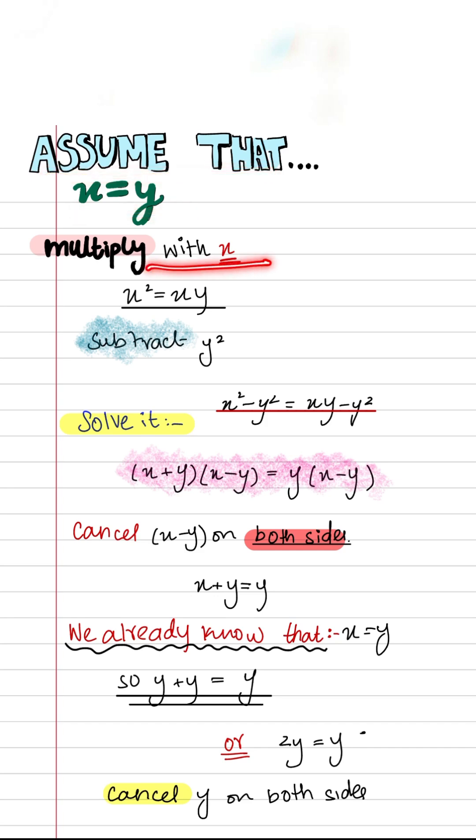Multiply with x, so x multiplied by x becomes x squared. X multiplied by y is xy.